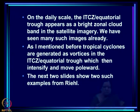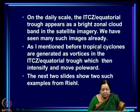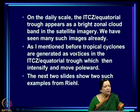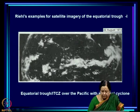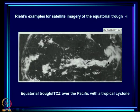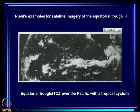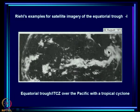On the daily scale, the canonical ITCZ or equatorial trough appears as a bright zonal cloud band in satellite imagery. This is from Riehl's book showing the Pacific region — a zonal band over the eastern Pacific with a cyclone taking off. This illustrates the interaction between planetary scale and synoptic scale: all cyclones are born as cloud blobs within the ITCZ, then they start intensifying and take off. This is a canonical ITCZ picture over the Pacific Ocean.